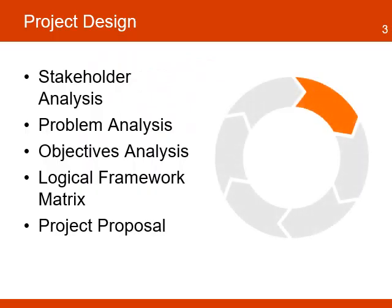Project design is the second phase of the DME cycle. This phase consists of the following elements: analysis of the project stakeholders, problem analysis, analysis of the objectives, the use of the logical framework matrix, and the development of the full project proposal. The first four elements of the design are also known as the logical framework approach.